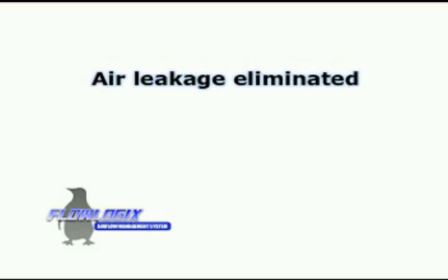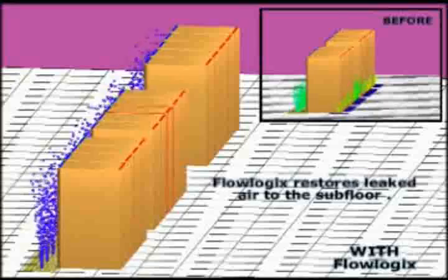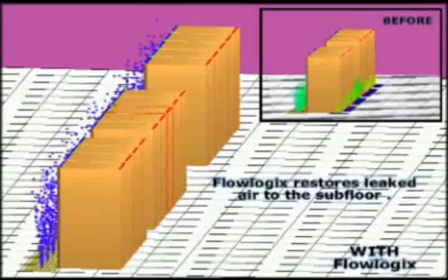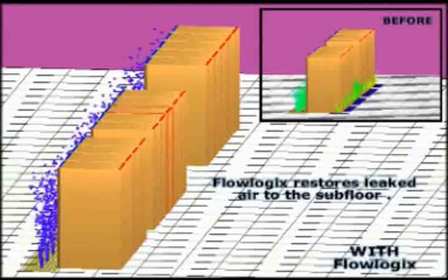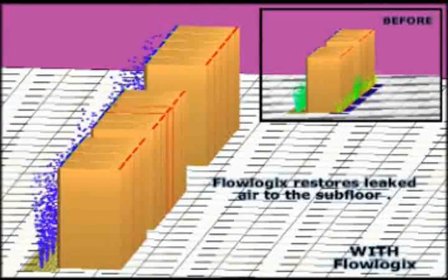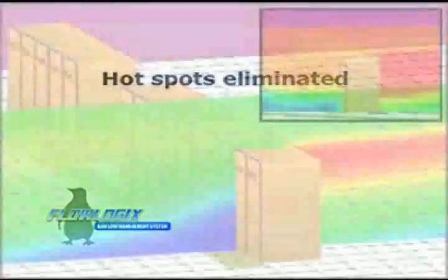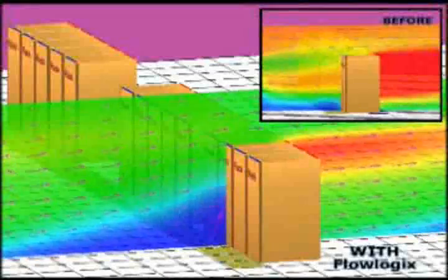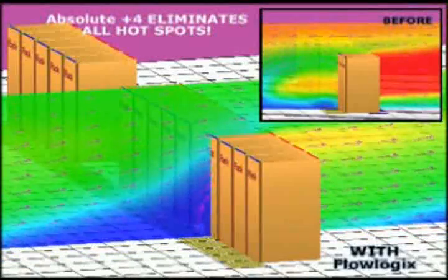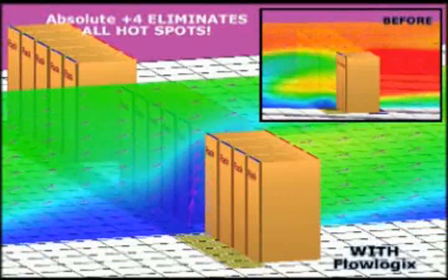Flowlogix eliminates all leakage by sealing all unmanaged openings. Our air stops can be installed and removed in less than three seconds, making it easy for wires to be added and removed. After airflow is returned to the subfloor, Flowlogix is strategically designed to distribute the air through the perforated tiles and eliminate all hot spots.